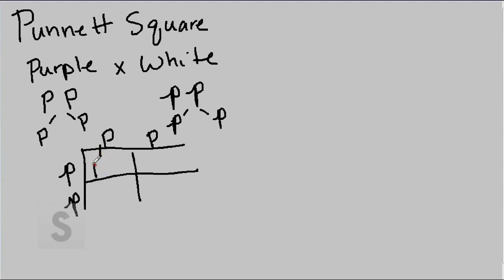So according to this, these individuals are going to have a big P here, little p there, big P here coming from there, a little p there, big P, little p, and big P, little p. 100% of our offspring are going to be big P, little p.